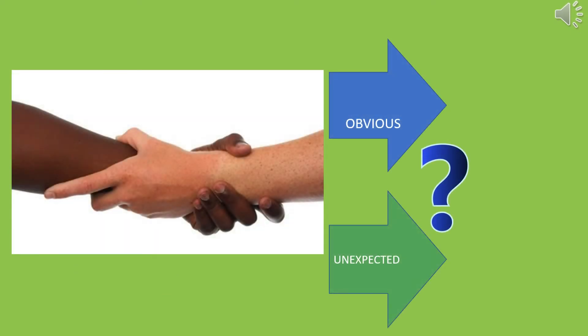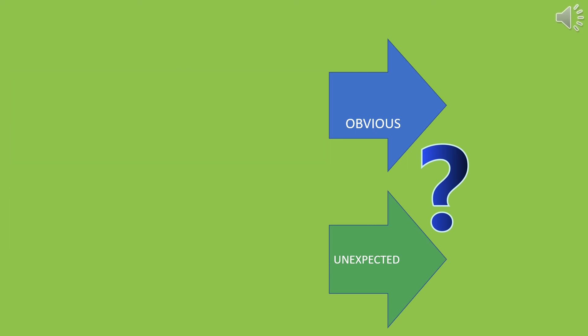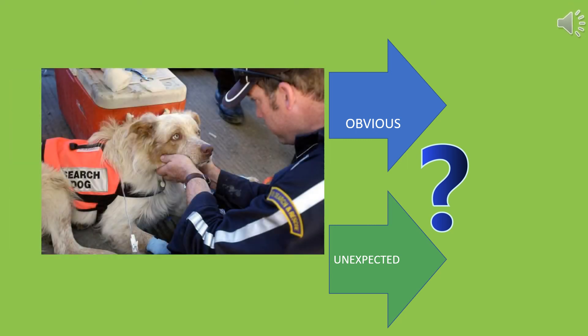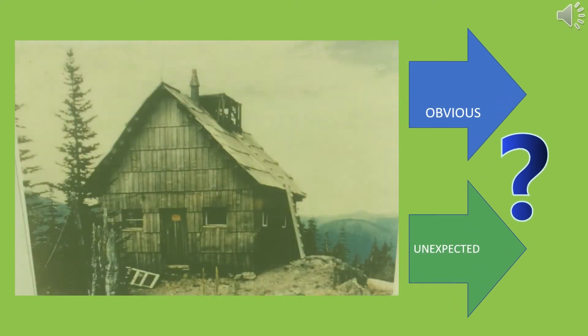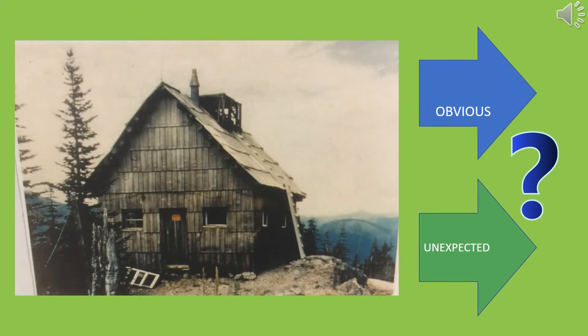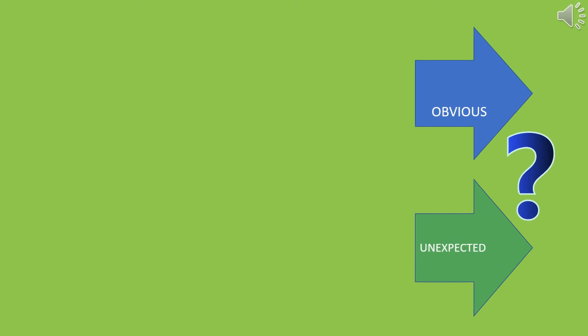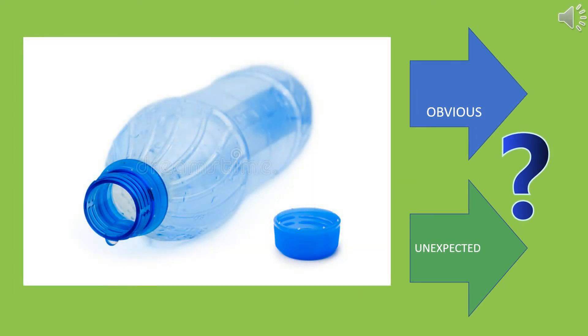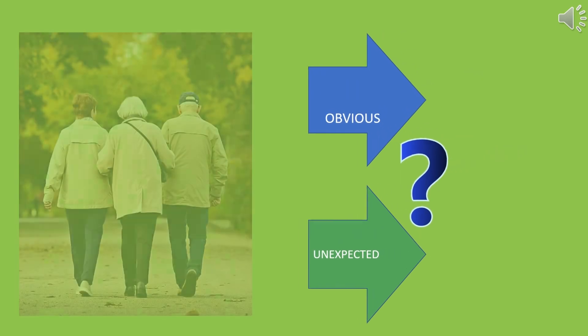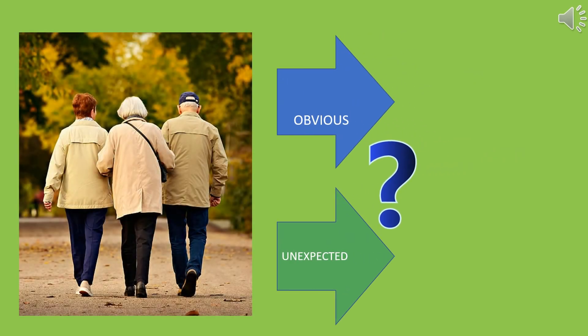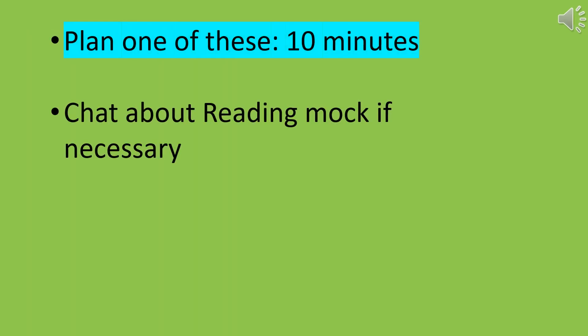Try and think of obvious and unexpected scenarios for all these pictures: a rescue dog, a remote shack, an empty water bottle, three very old people going for a walk in the park. Take 10 minutes to plan one of these into a story — use an unexpected element and try to plan your narrative hook.